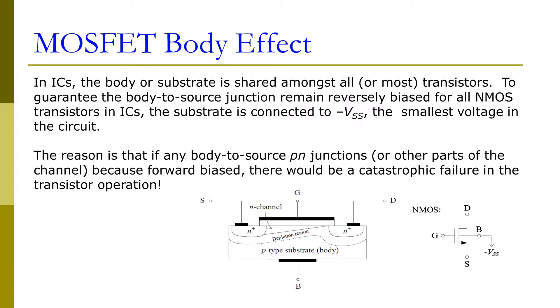For example, negative VSS, which is the smallest voltage in the circuit. The reason is that if any body-to-source PN junctions become forward biased, we will have a large current leakage that will result in catastrophic failure in the transistor operation.